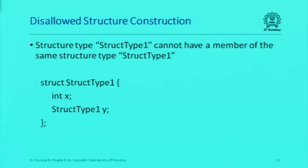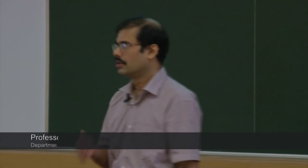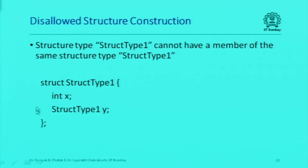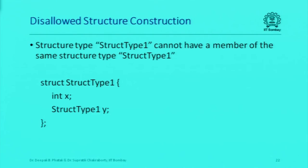Now what would happen if I tried to define a structure called struct type 1 which has an integer member x, and then a member named y of the same type struct type 1? This is a recursive definition of a structure, and it causes a problem. If I try to determine how much storage I need for an object of type struct type 1, I would need 4 bytes for the integer member x.